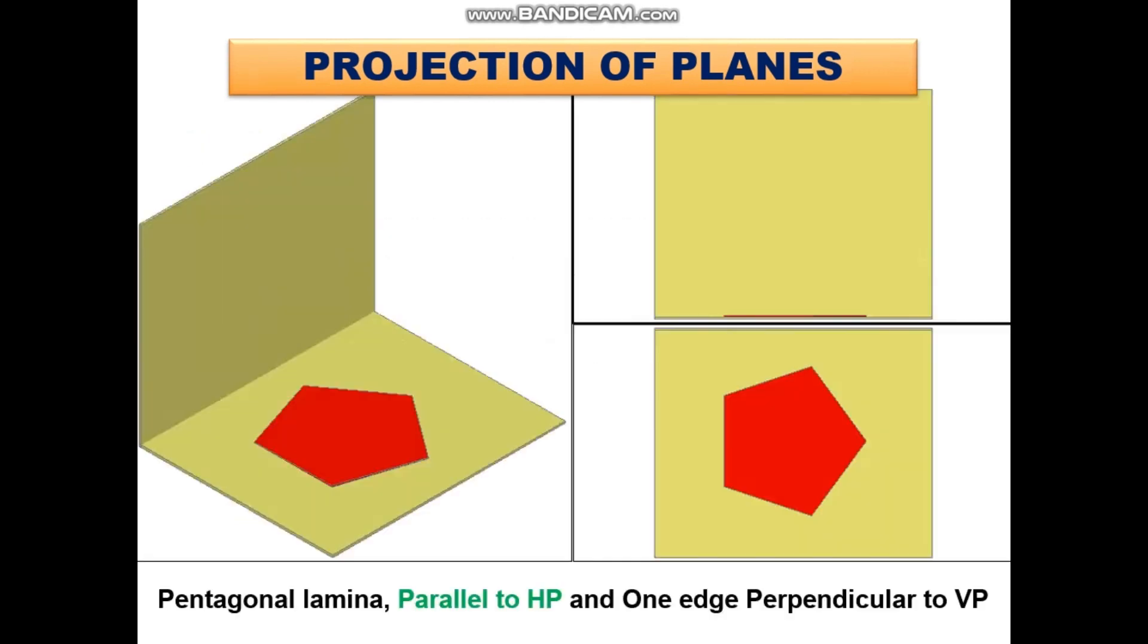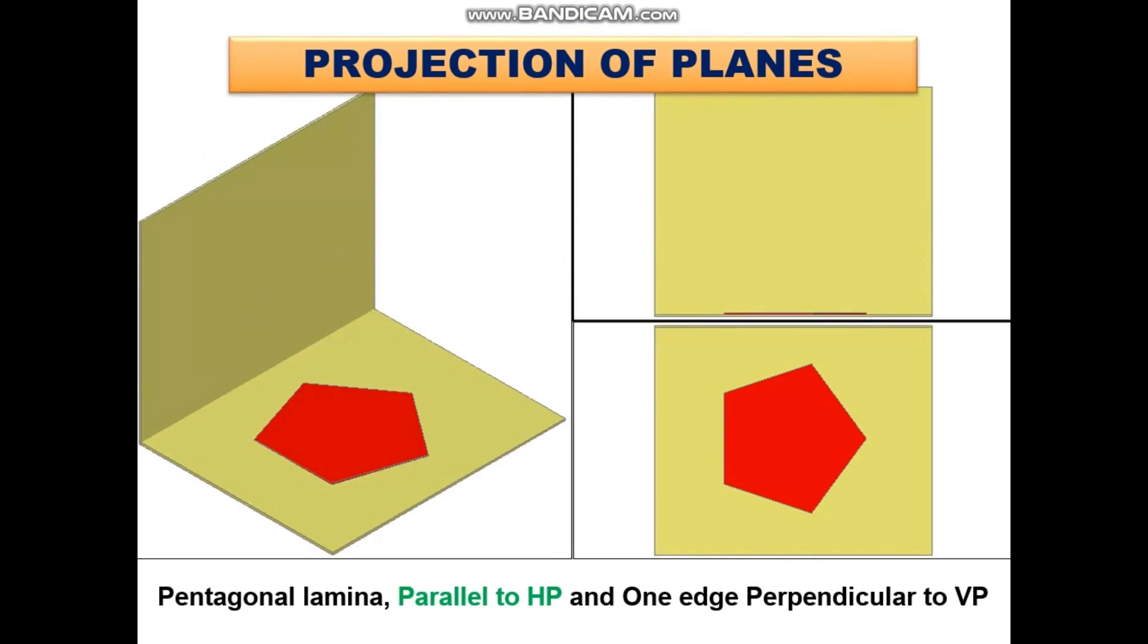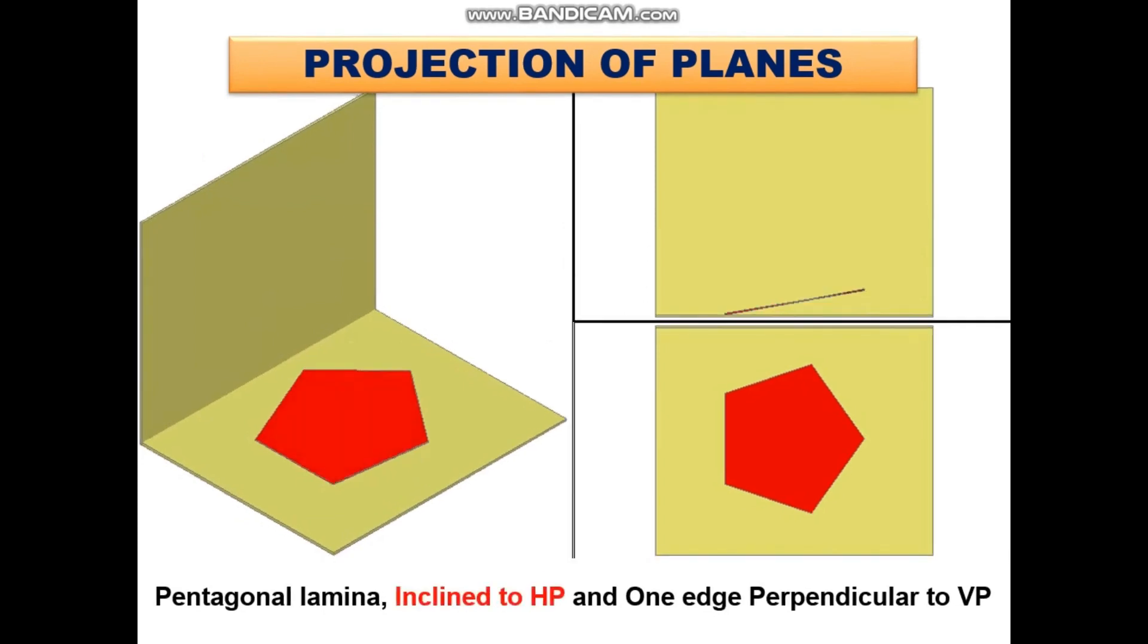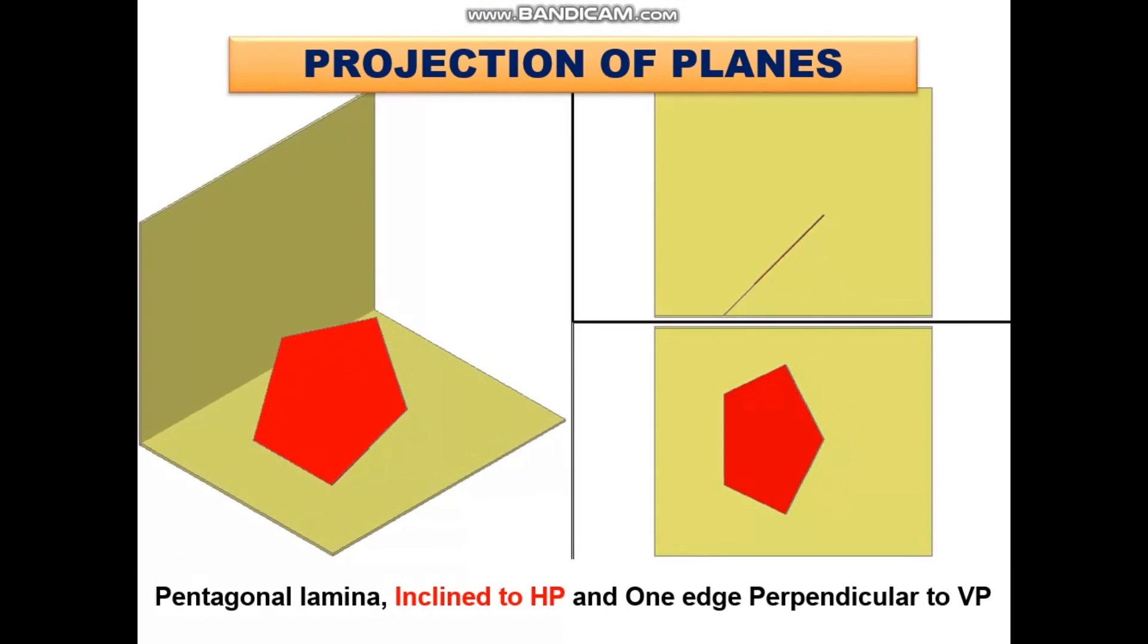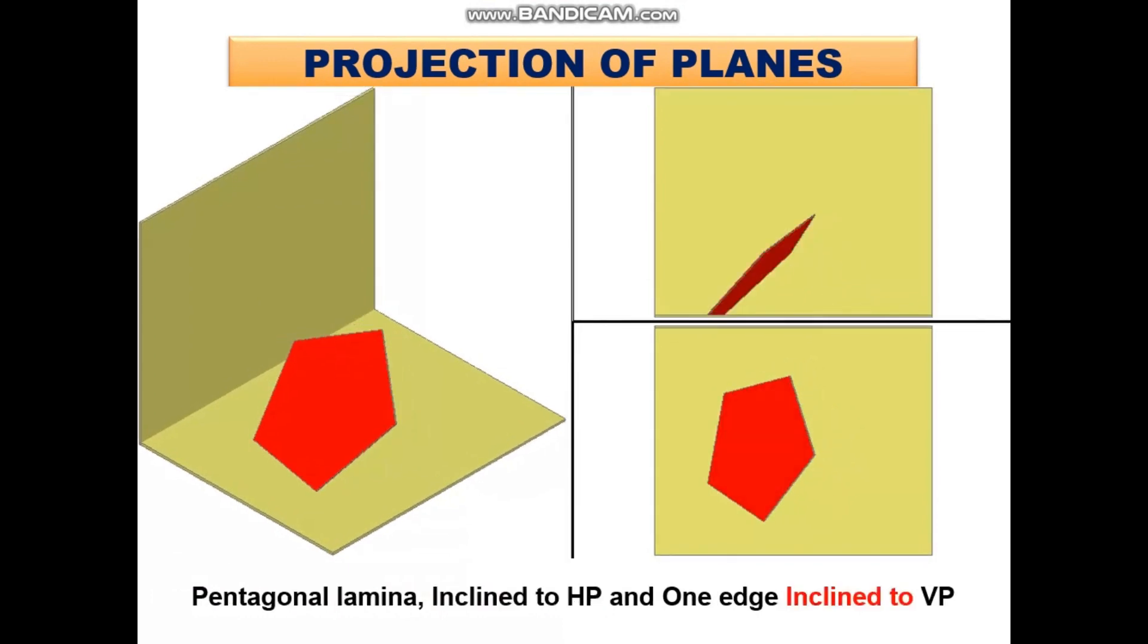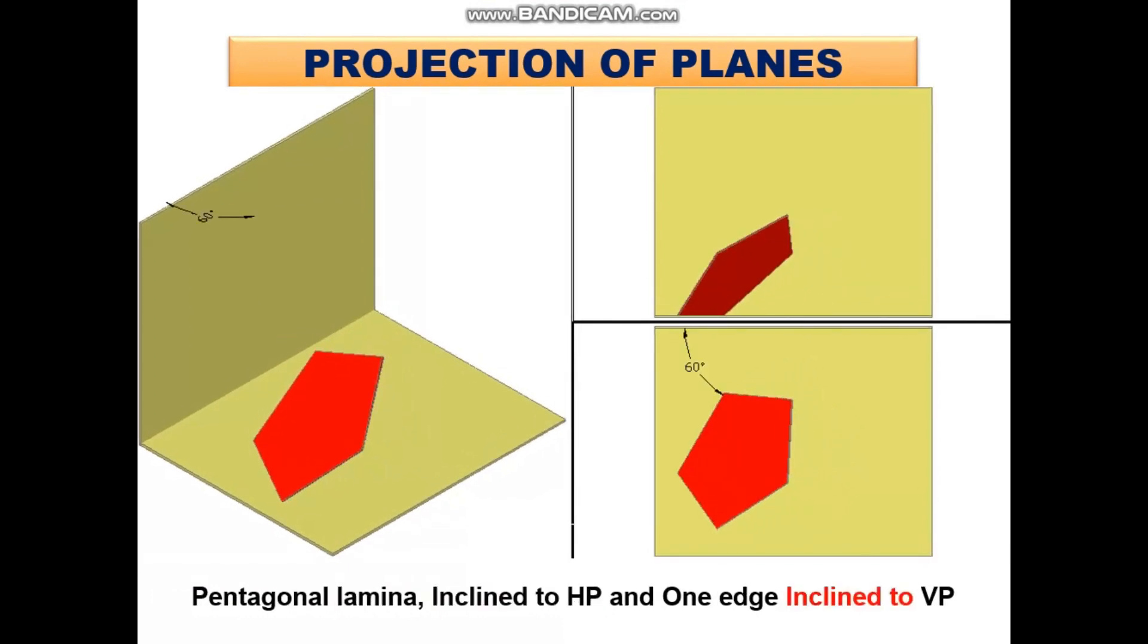Since the surface of the pentagon is inclined to HP and one edge of it is inclined to VP, initially we have to assume that the surface is parallel to HP and an edge perpendicular to VP. Then the plane is tilted to make it 45 degrees inclined to HP. Now the edge is tilted to make it 60 degrees inclined to VP. The projections of this case can be drawn in three stages.